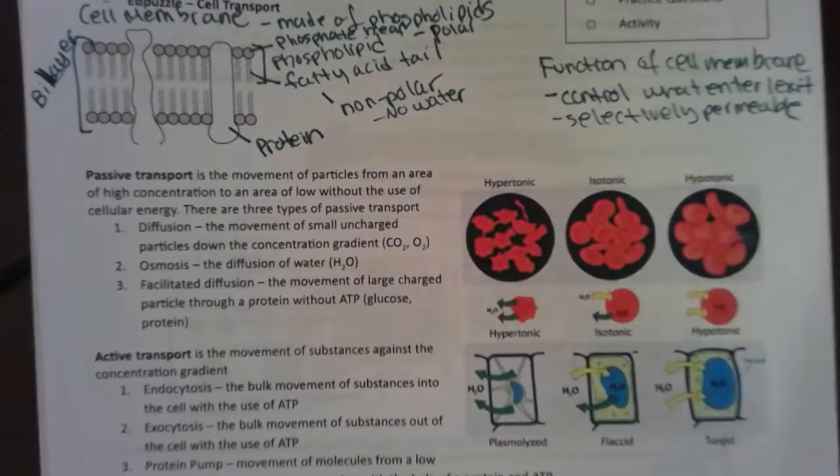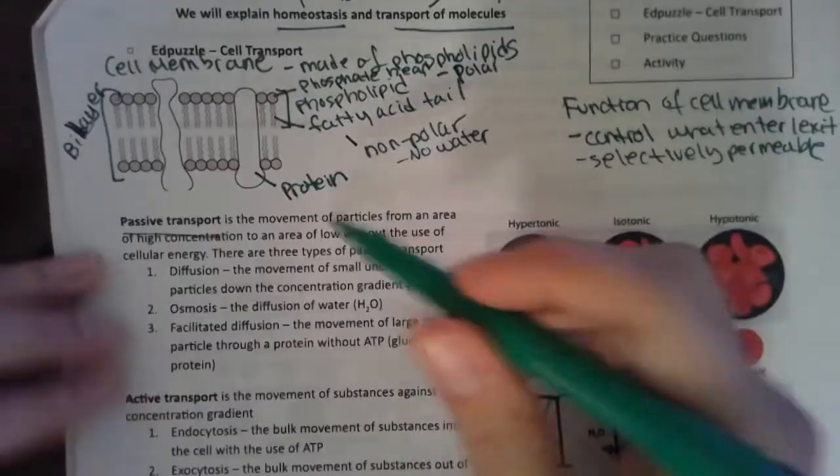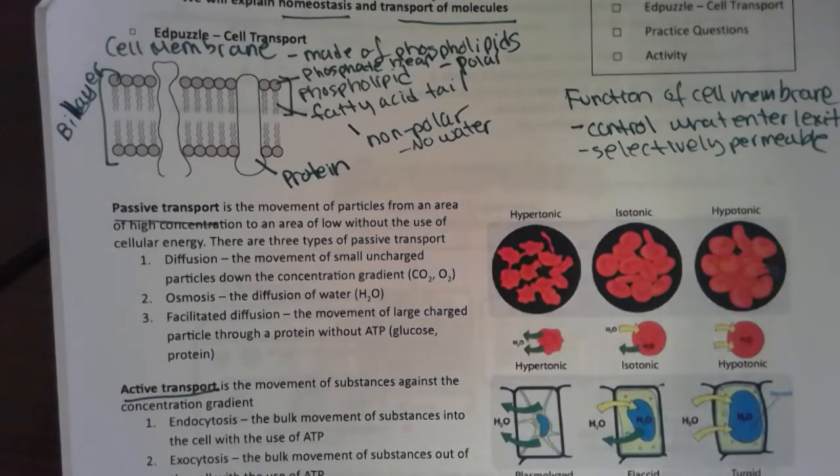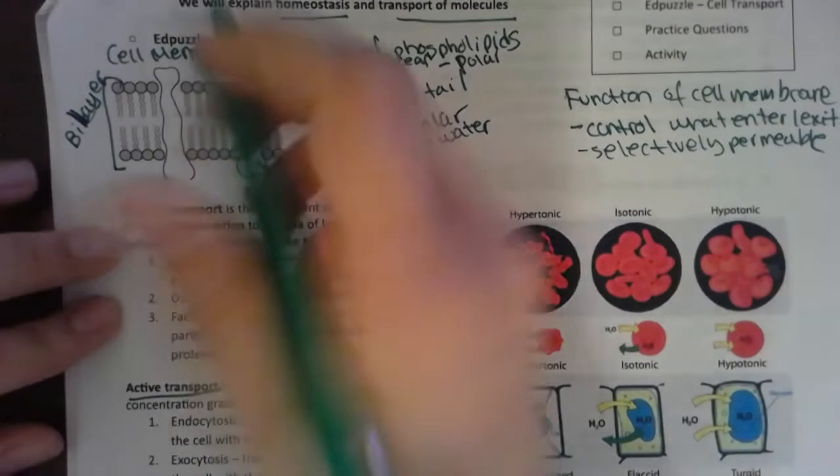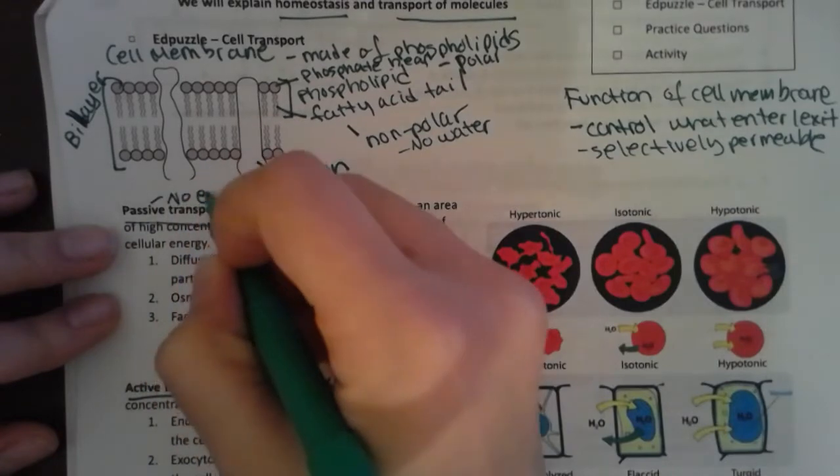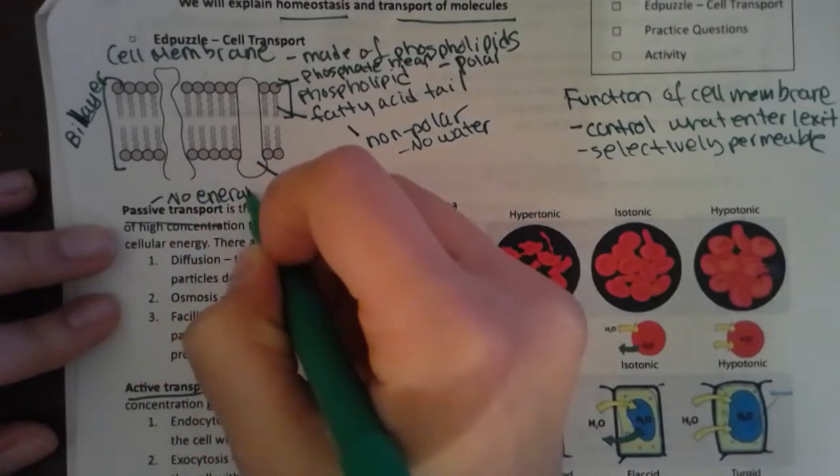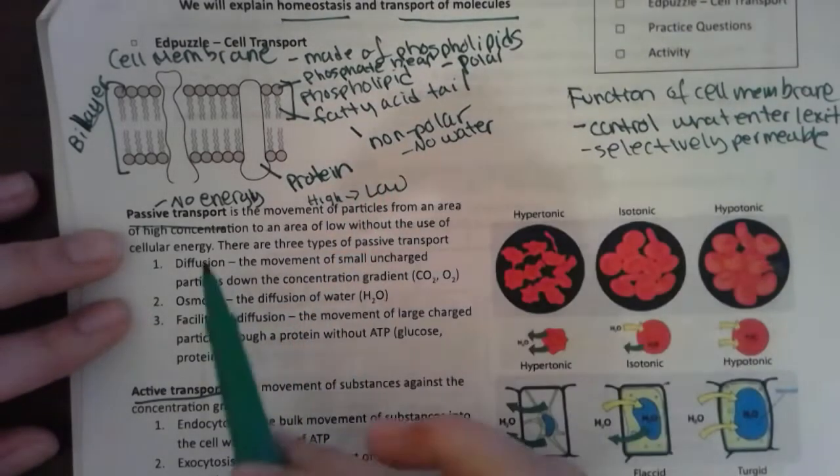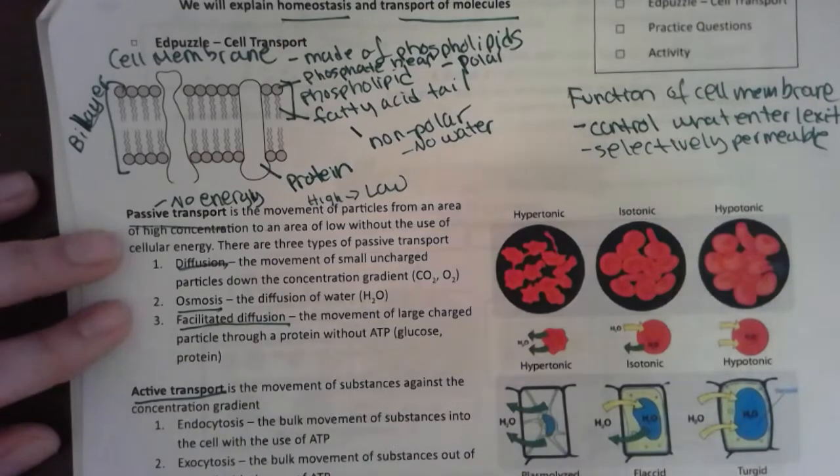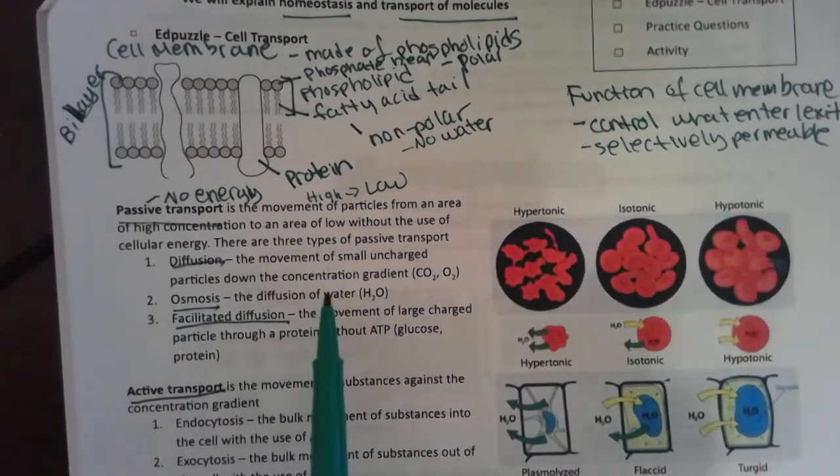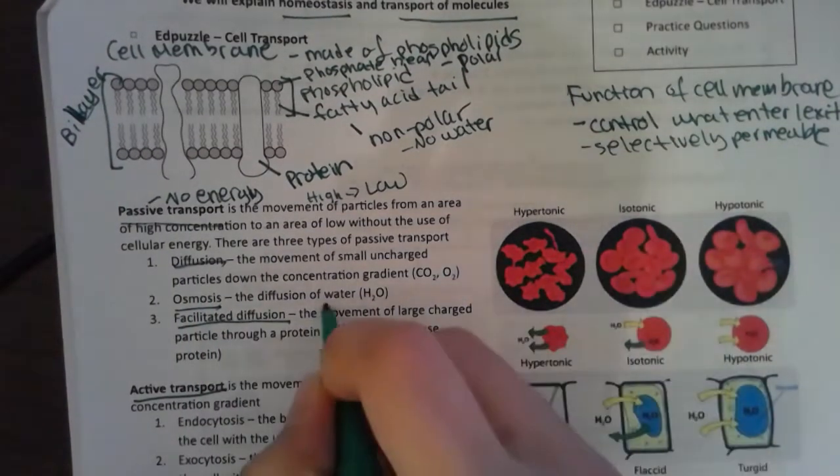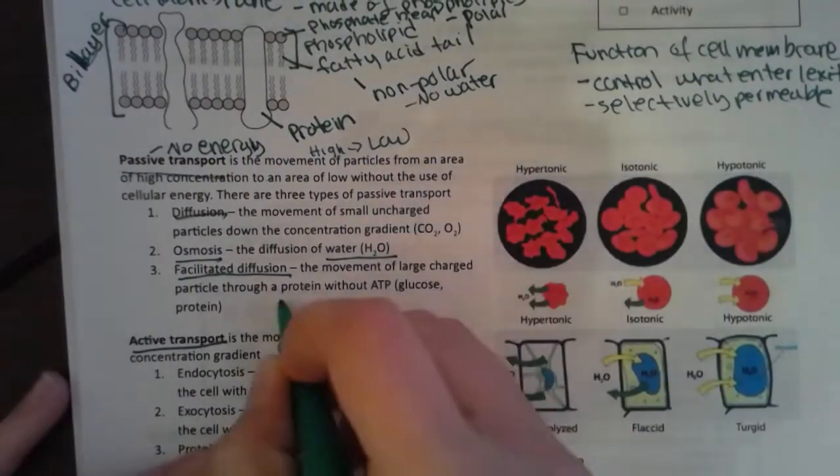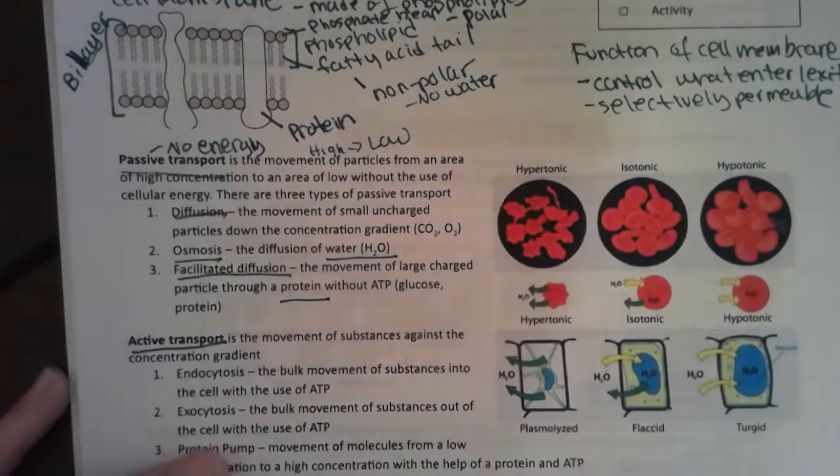We have passive transport. I'm not going to go over all of it, just the key points. Passive transport means that I am not using energy and I'm going high to low. There are three types: diffusion, osmosis, and facilitated diffusion. Diffusion is any particle, osmosis is just referring to water, and facilitated diffusion means that I am using a protein.